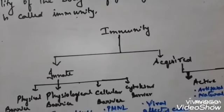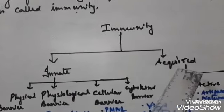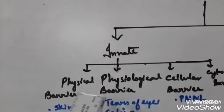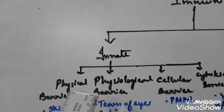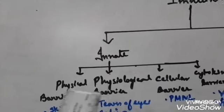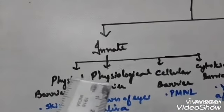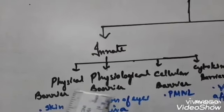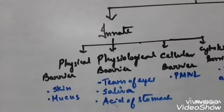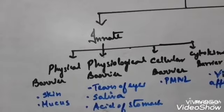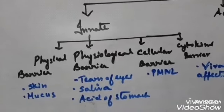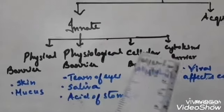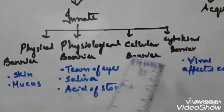This immunity can be divided into two basic types: innate immunity and acquired immunity. Innate immunity is a non-specific type of defense which an individual is born with and which is always available to protect the body. It consists of four major types of barriers that prevent pathogens or foreign elements from entering the body: physical barrier, physiological barrier, cellular barrier, and cytokine barrier.